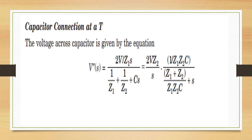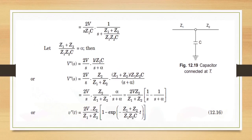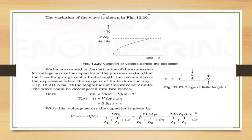For a capacitor at a T-junction, voltage across the capacitor is: v″(s) = 2v/Z₁s ÷ (1/Z1+1/Z2+Cs). Simplifying: v″(s) = (2vZ₂/(Z₁+Z₂)) × (1/s − 1/(s+α)), where α = (Z₁+Z₂)/(Z₁Z₂C). Taking the inverse Laplace transform: v″(t) = 2vZ₂/(Z₁+Z₂) × (1 − e^(−(Z₁+Z₂)t/(Z₁Z₂C))). The variation of the wave is shown in the figure.